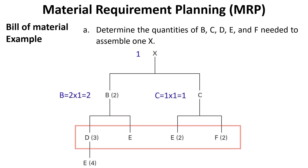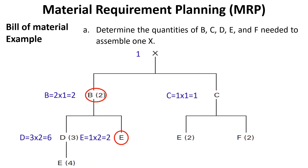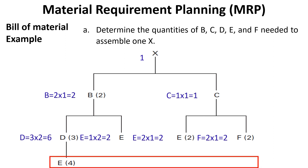Moving to the next level: three D's are required to produce one B, so D equals three multiplied by two — as two B's are required for one X — equals six. For item E: one E is required to produce one B, so E equals one multiplied by two equals two. Another two E's are required to produce one C, so E equals two multiplied by one equals two. And two F's are required to produce one C, so F equals two multiplied by one equals two.